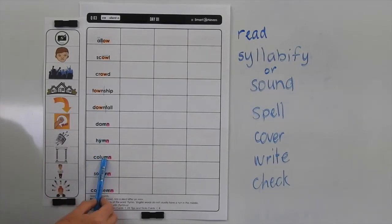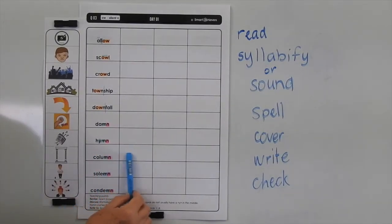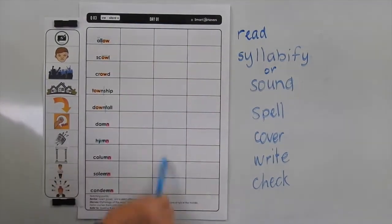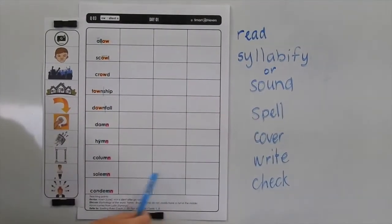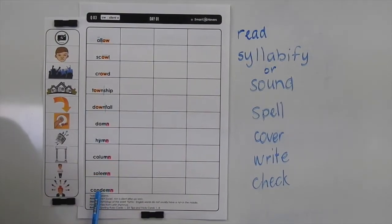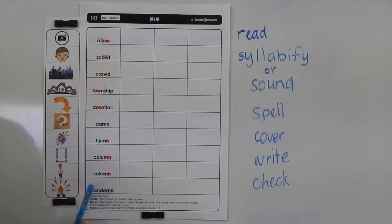A column is a pole or a post, quite often decorative, that we use in buildings. The other meaning of column is if you were making a table on your computer — the vertical grid would be called a column, and the ones that go across the page would be called rows. Solemn means serious, and condemn means when you disapprove of something, or someone may be condemned and given a form of punishment if they've done something wrong.